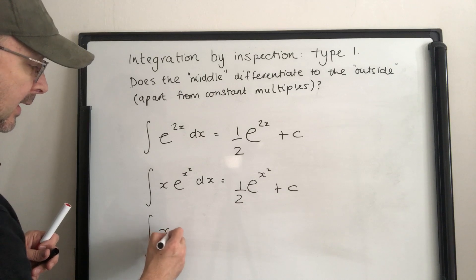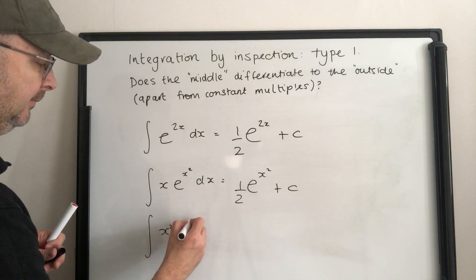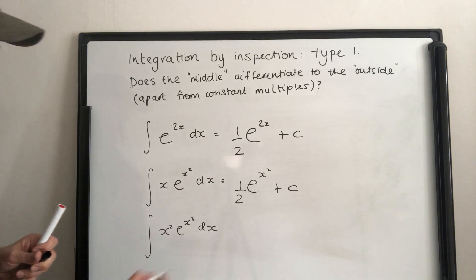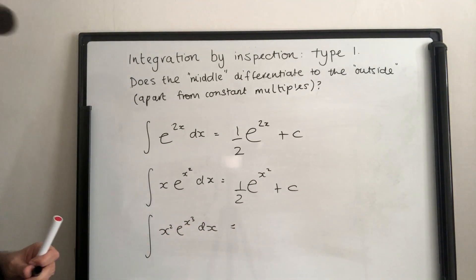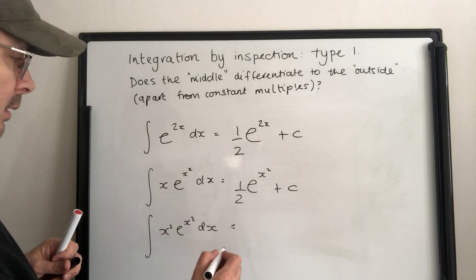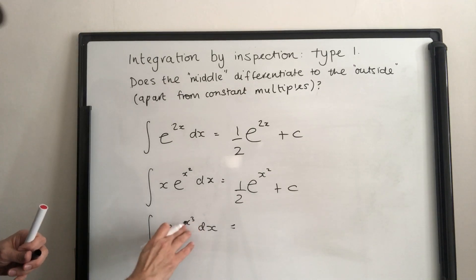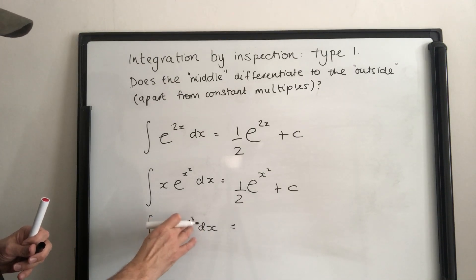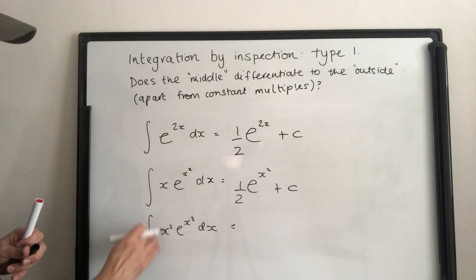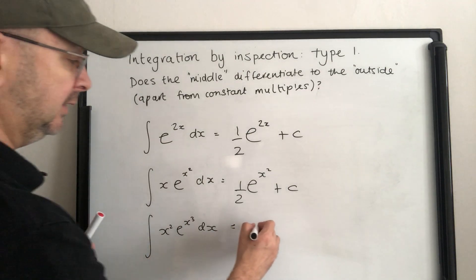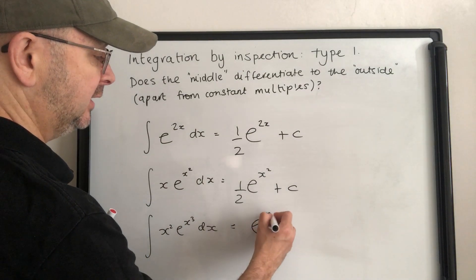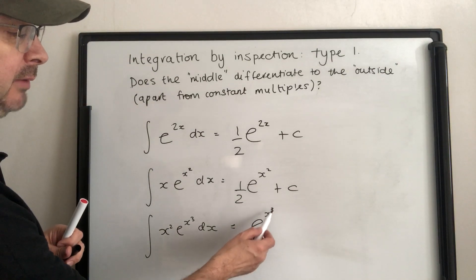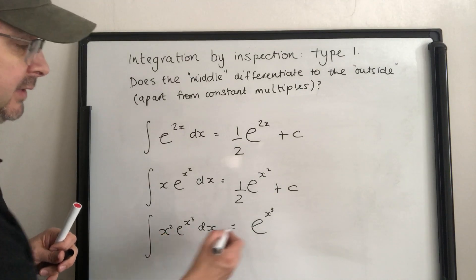If you've got x squared times e to the x cubed, the middle is x cubed. It differentiates to 3x squared, and I've got the x squared — I'll adjust for the 3. So I write down e to the x cubed. That differentiates to e to the x cubed times 3x squared. I don't want the 3, so the answer is one third e to the x cubed, plus c.